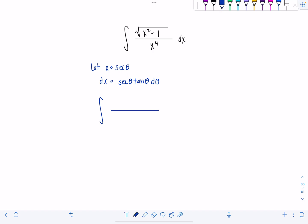So in the numerator, we're going to have square root secant squared theta minus 1. And then in the denominator, since x is secant theta, this is going to be secant to the 4th theta. And then instead of dx, we have secant theta tan theta d theta. Alright, very good.